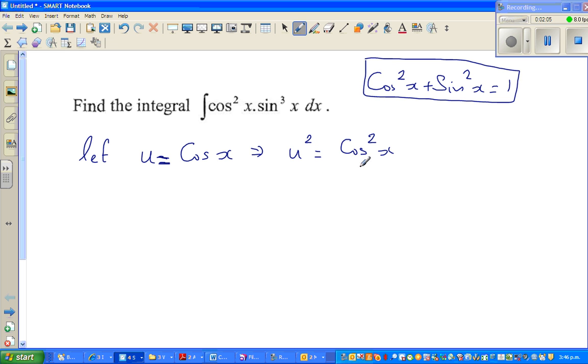So if you put that, cos squared is one minus sine squared. So this implies u squared is one minus sine squared x.